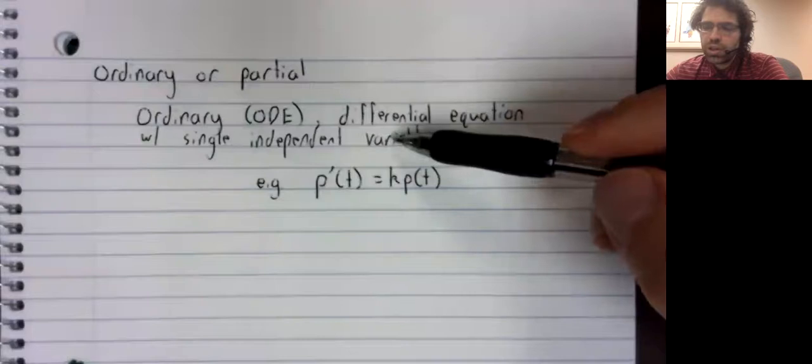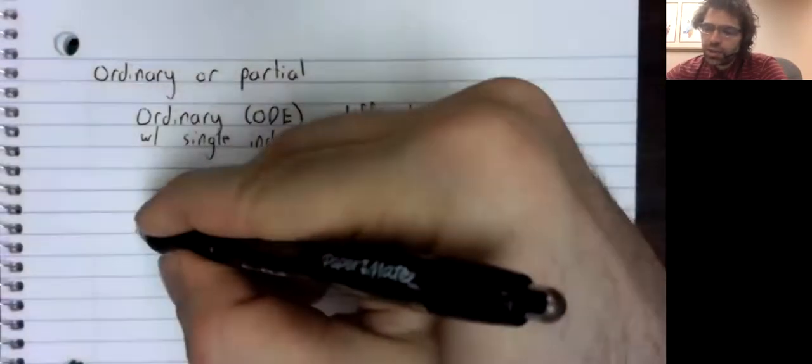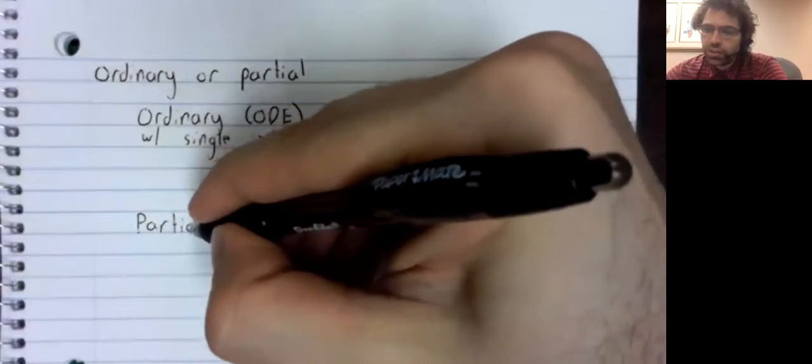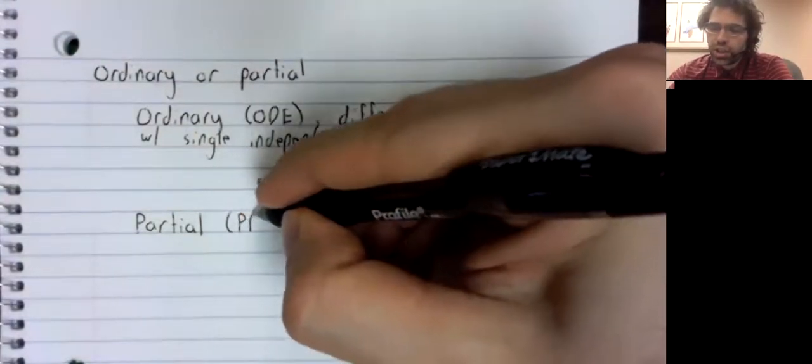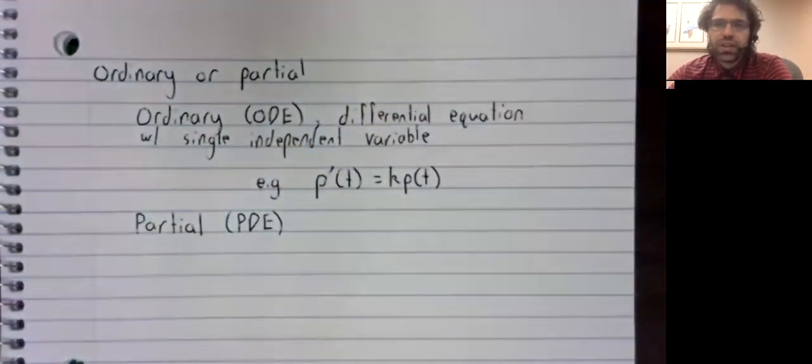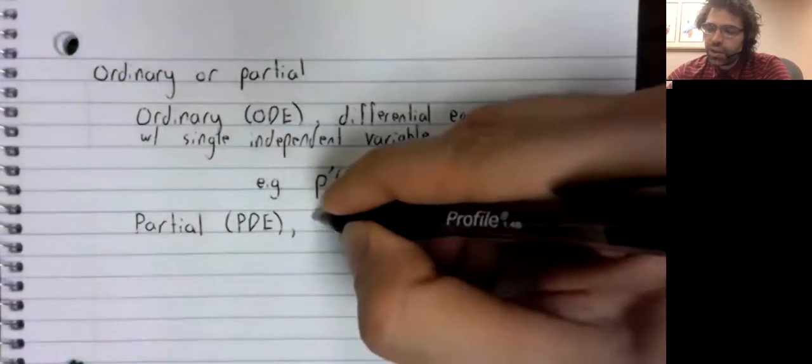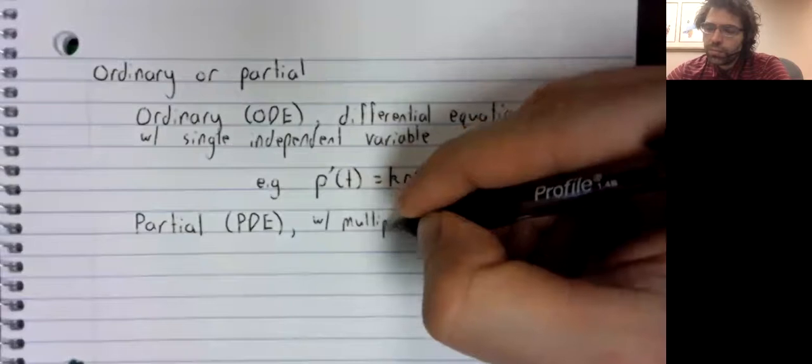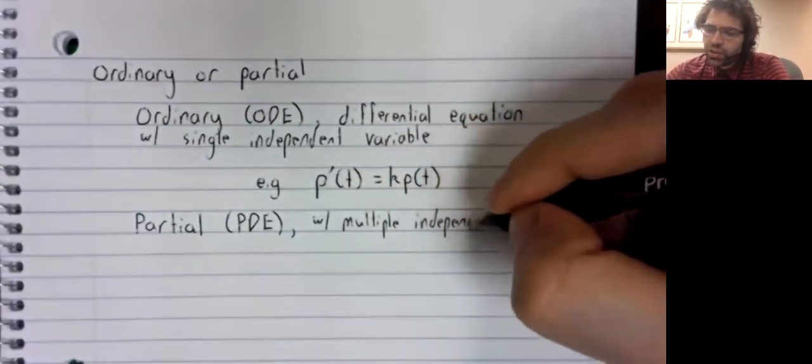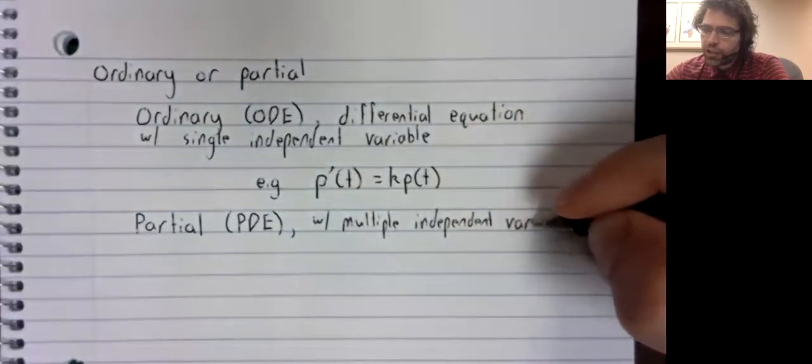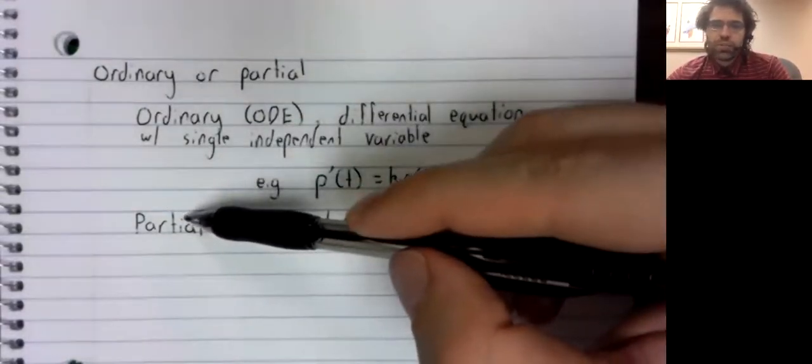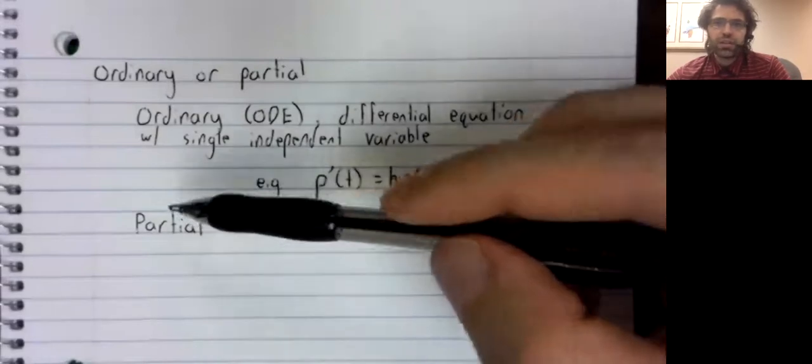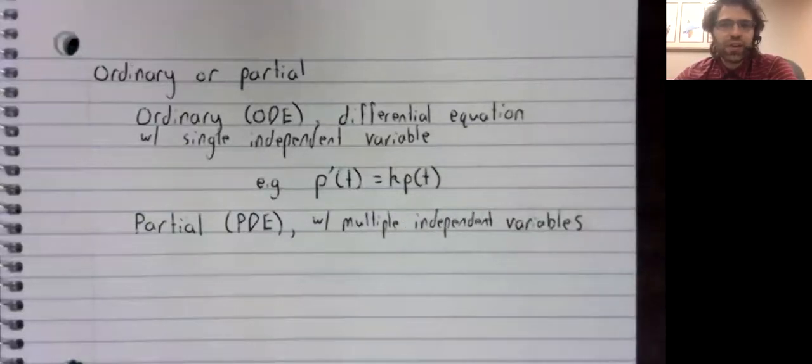Our independent variable here is time. There is only one independent variable, as opposed to a partial differential equation, abbreviated PDE, where you have multiple independent variables. The word partial comes from the fact that if you have multiple independent variables, you need to take partial derivatives.